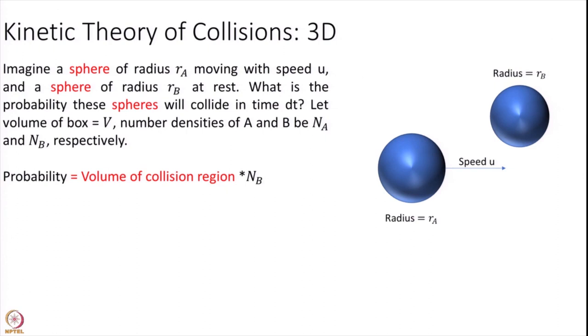That was 2D. That was just so that we have an understanding of how to calculate these areas and build a basic picture. Reality is in 3D. So the question remains the same. Now I have a sphere of radius rA moving with some speed u and let us assume again B is at rest. We will come to it. Do not worry. I know you have questions. We will come to that. But let us start with assuming B to be at rest. Bear with me. What is the probability that these spheres will collide with each other in some time interval delta t? Again, you can have the number densities and the total volume is V.